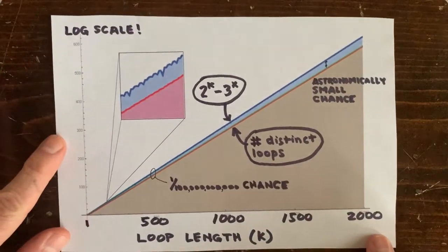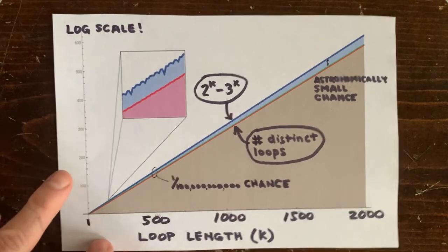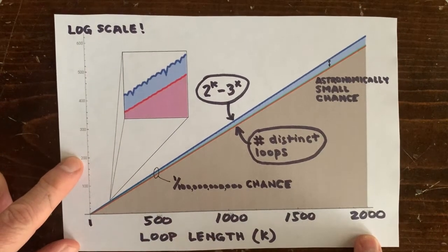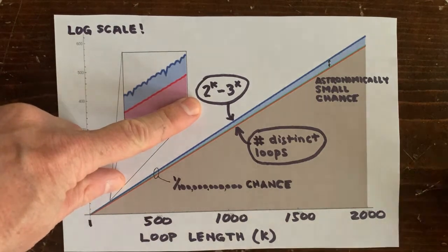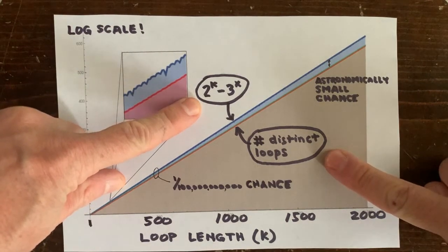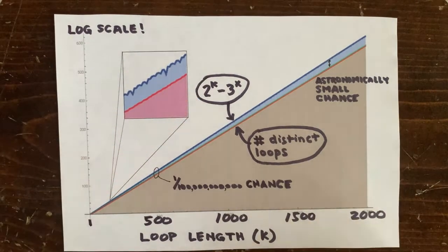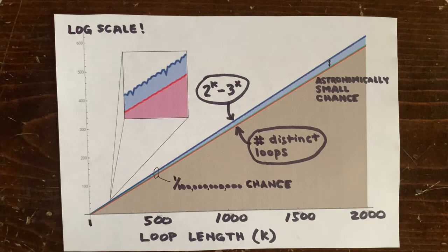So in this graph we see longer loop lengths on the x-axis here. On the y-axis in blue we have 2 to the k minus 3 to the x, the divisibility target. And also on the y-axis in red we have the number of distinct loops of length k, the number of shots. So the expected number of integer loops at length k is red over blue.